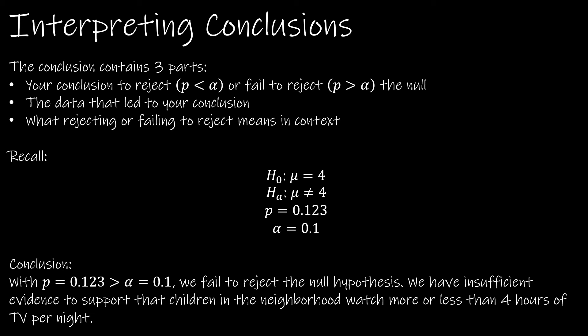So again, in writing a full conclusion with three parts, the first thing that we take a look at is what is the conclusion. We have to look at: is p less than alpha or is p greater than alpha? Looking at our data here, we have that p = 0.123 is greater than alpha. Therefore, we are going to fail to reject the null.